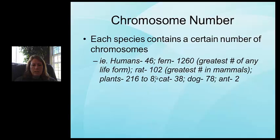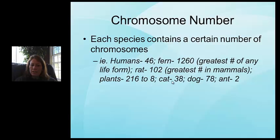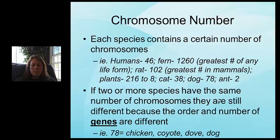Each species has its own set of chromosomes. Make sure you know that humans have 46. To show the range: a particular fern has the greatest number at 1,260; the greatest number in mammals is a rat at 102; plants range from 216 down to 8; cats have 38, dogs have 78, and even a small ant can have 2 chromosomes.